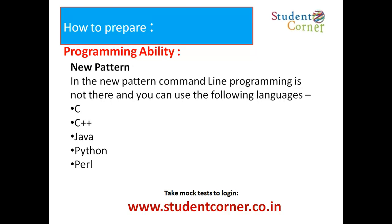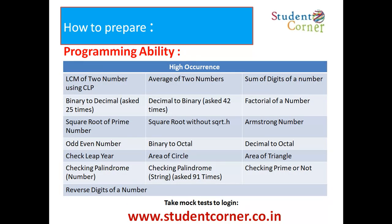Some questions have been asked previously. These are the questions asked previously: LCM of two numbers, average of two numbers, sum of the digits of a number, binary to decimal, decimal to binary, factorial of a number, square root of prime numbers, square root without using a built-in function, Armstrong number, odd number or even number, binary to octal, decimal to octal, check leap year or not, area of the circle, area of the triangle, checking palindrome or not, checking palindrome for strings, checking prime number or not, reverse of a given number.